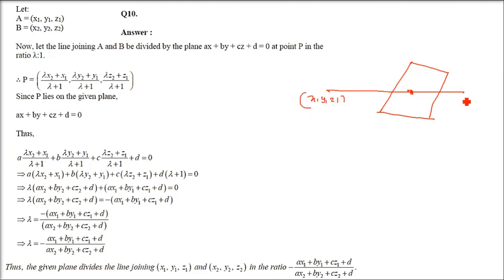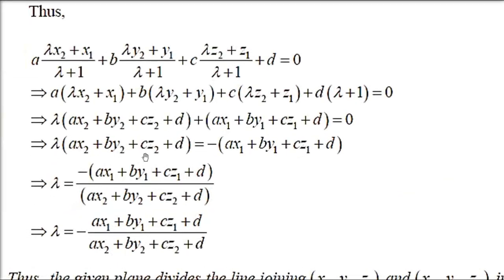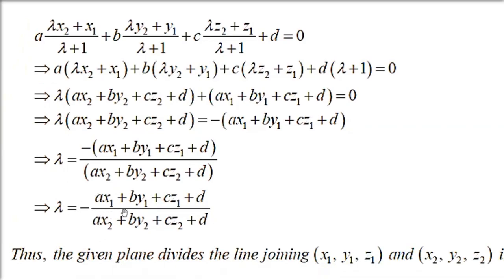We have points (x1, y1, z1) and (x2, y2, z2). Let the intersection point be (x, y, z). The ratio λ:1 is what we need to find. x, y, z can be computed using the section formula since λ and the corresponding points are given. We put these three section-formula values into the plane equation, and when we solve for lambda, it will be: λ = -(ax1 + by1 + cz1 + d) / (ax2 + by2 + cz2 + d).